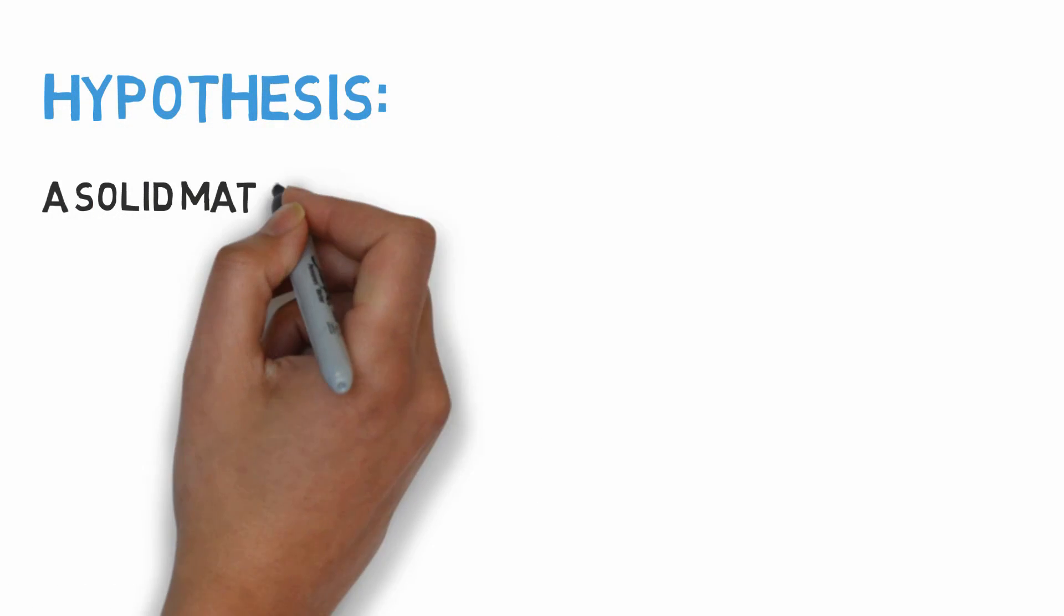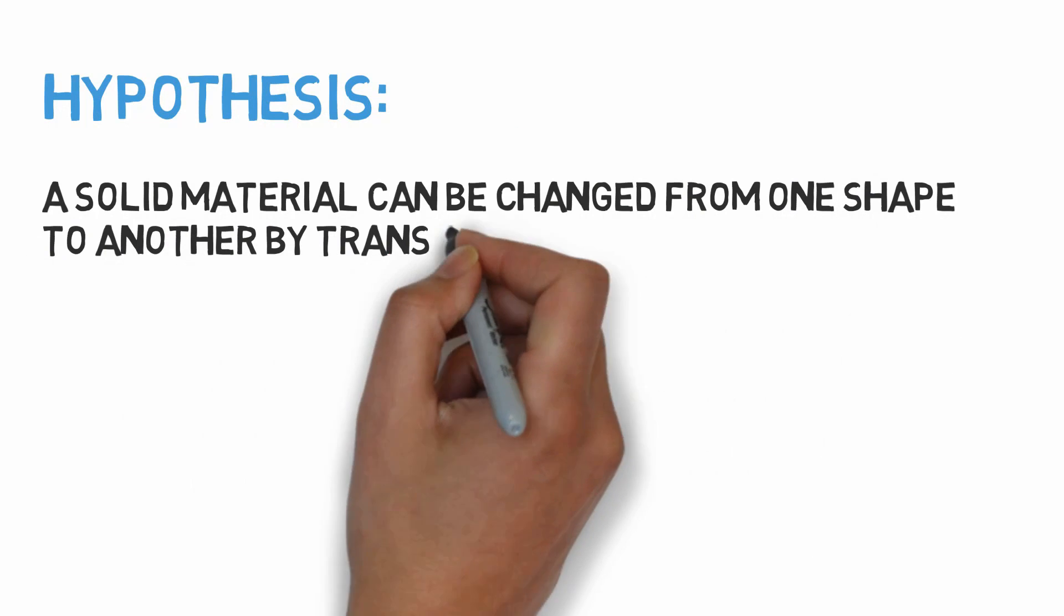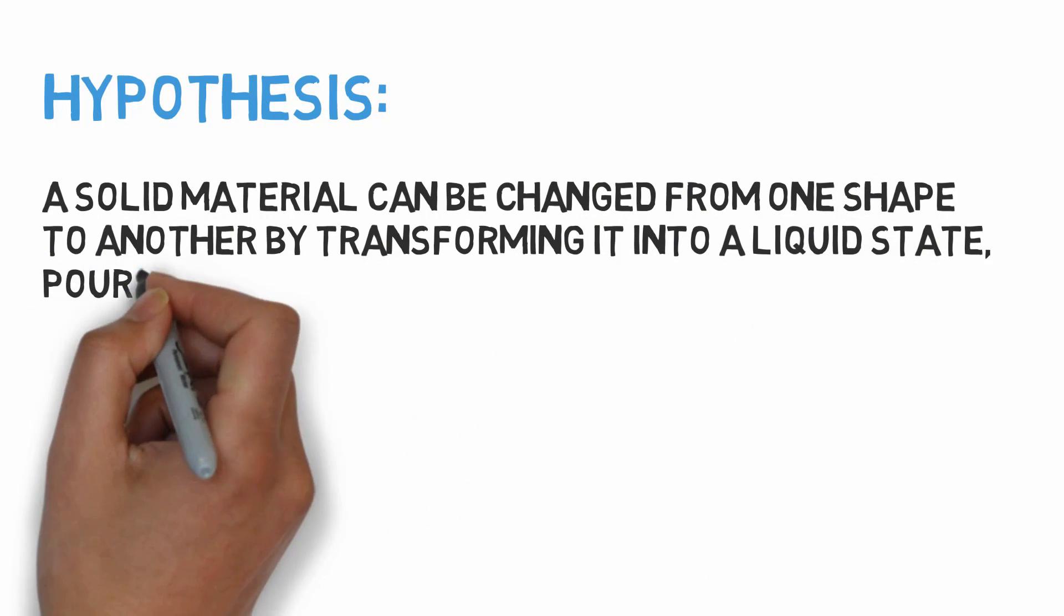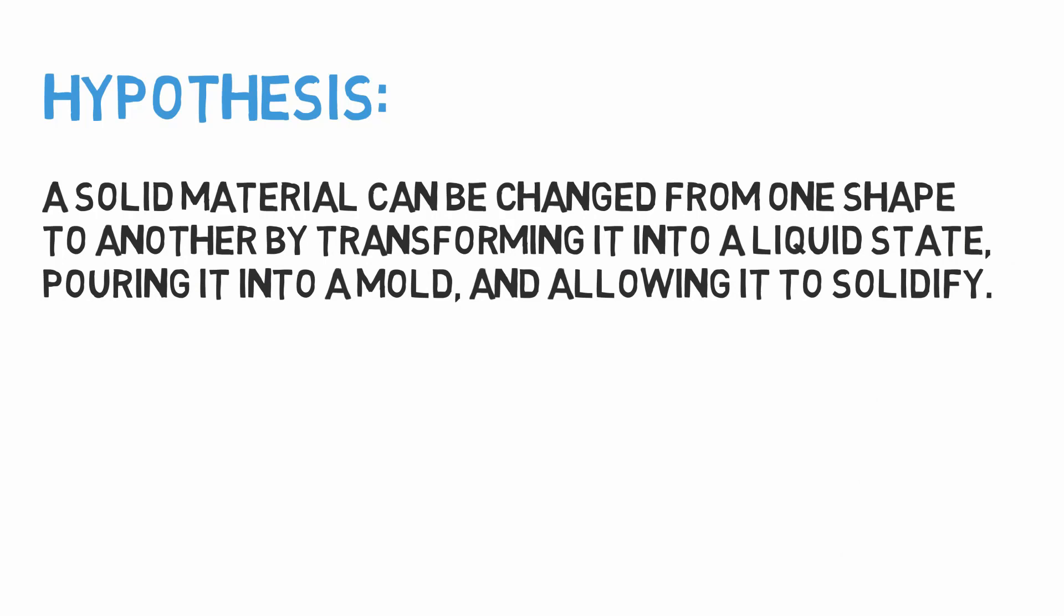Therefore, I will make the following hypothesis. A solid material can be changed from one shape to another by transforming it into a liquid state, pouring it into a mold, and allowing it to solidify.